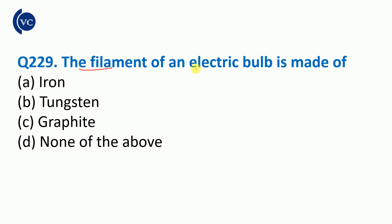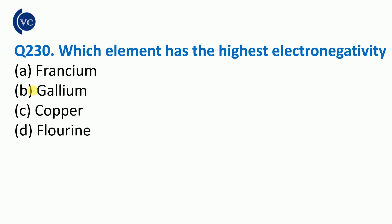Next question: the filament of an electric bulb is made of tungsten. The tungsten is used because of its very high melting point. So the correct answer is tungsten, due to its high melting point.